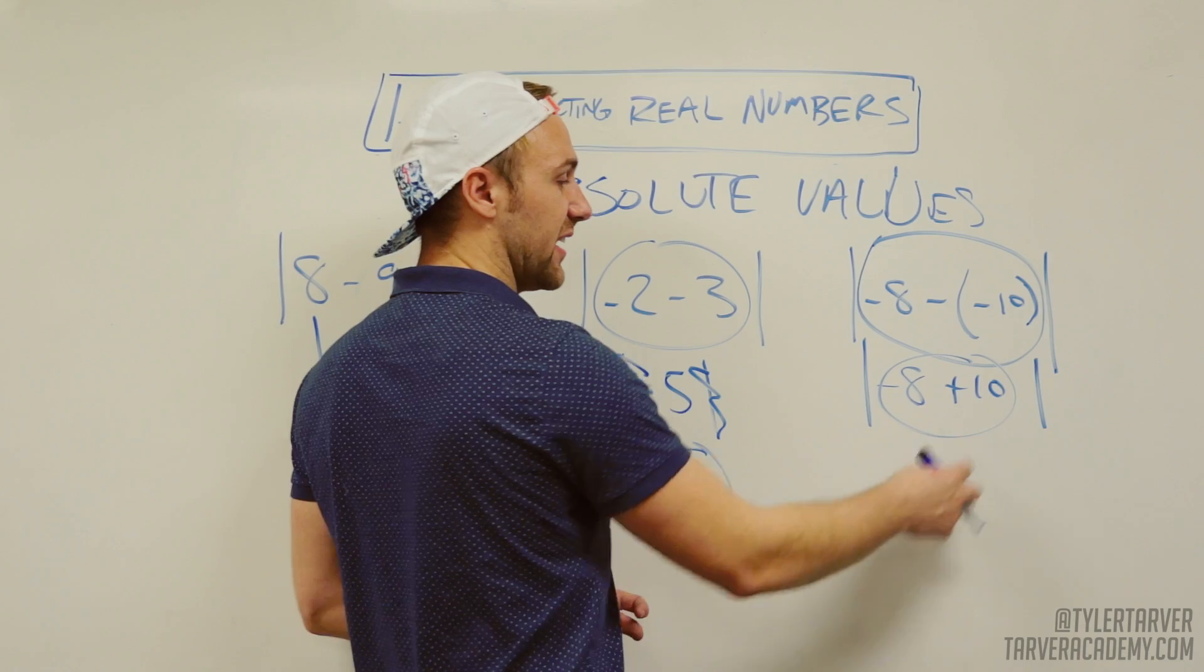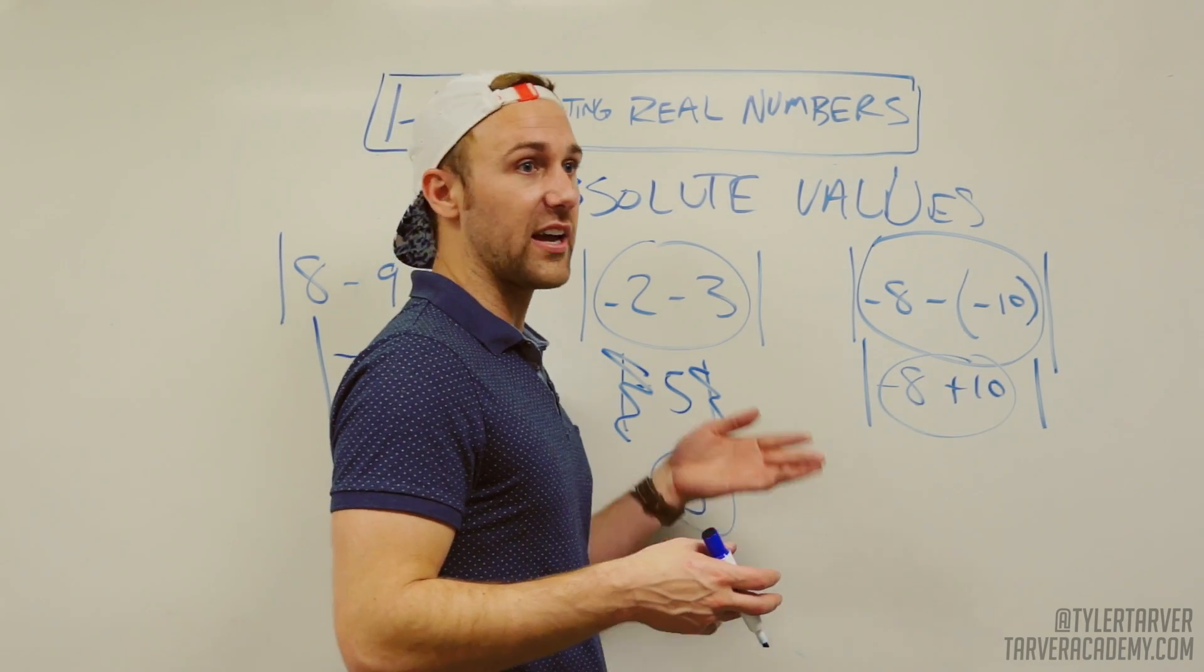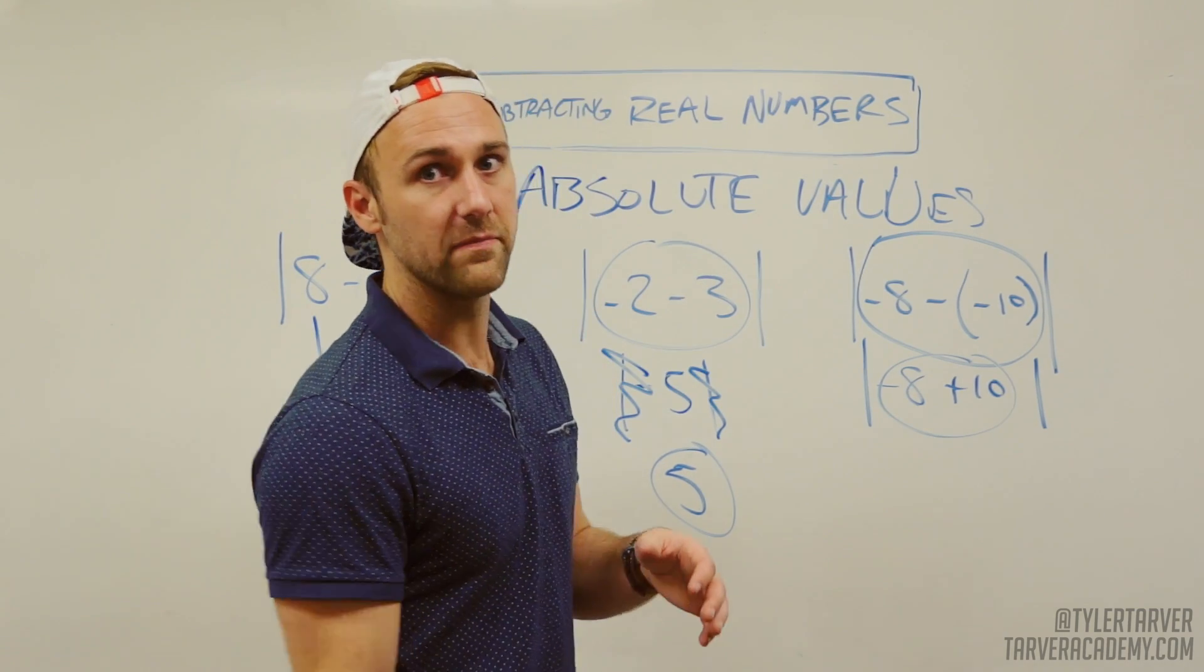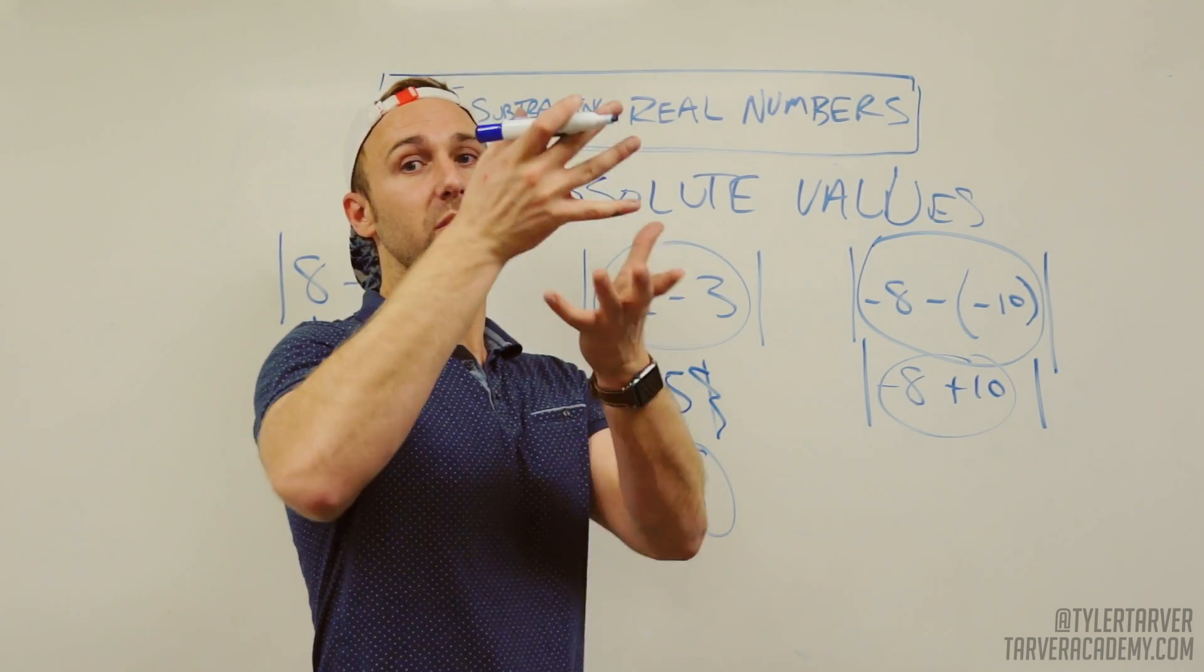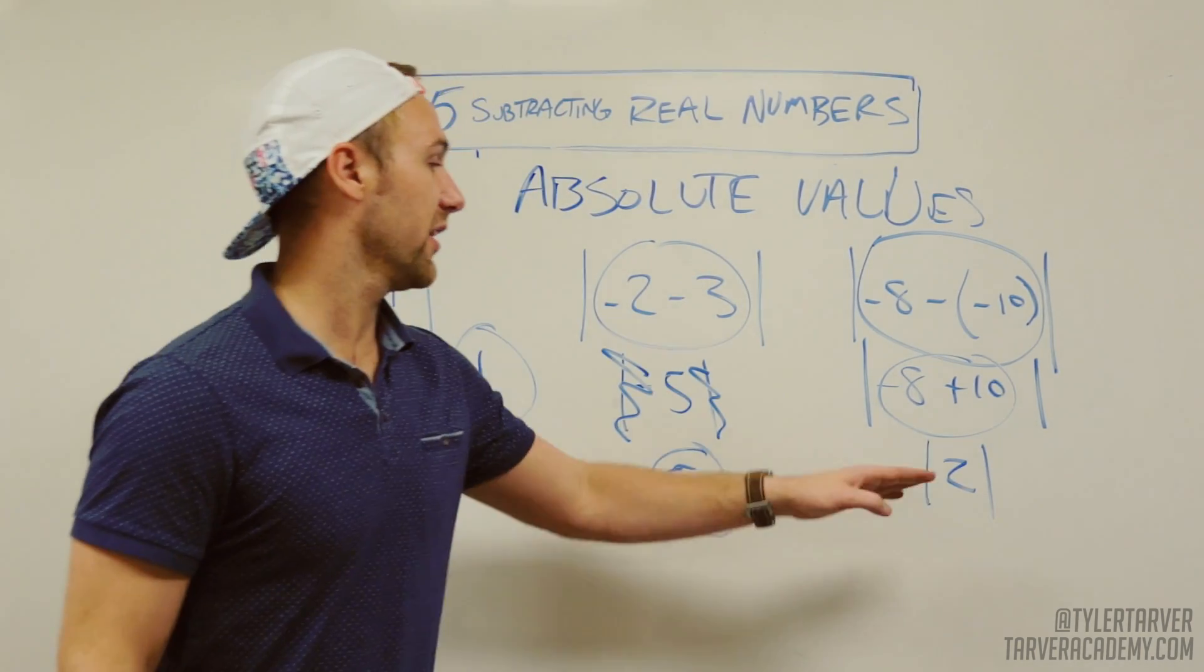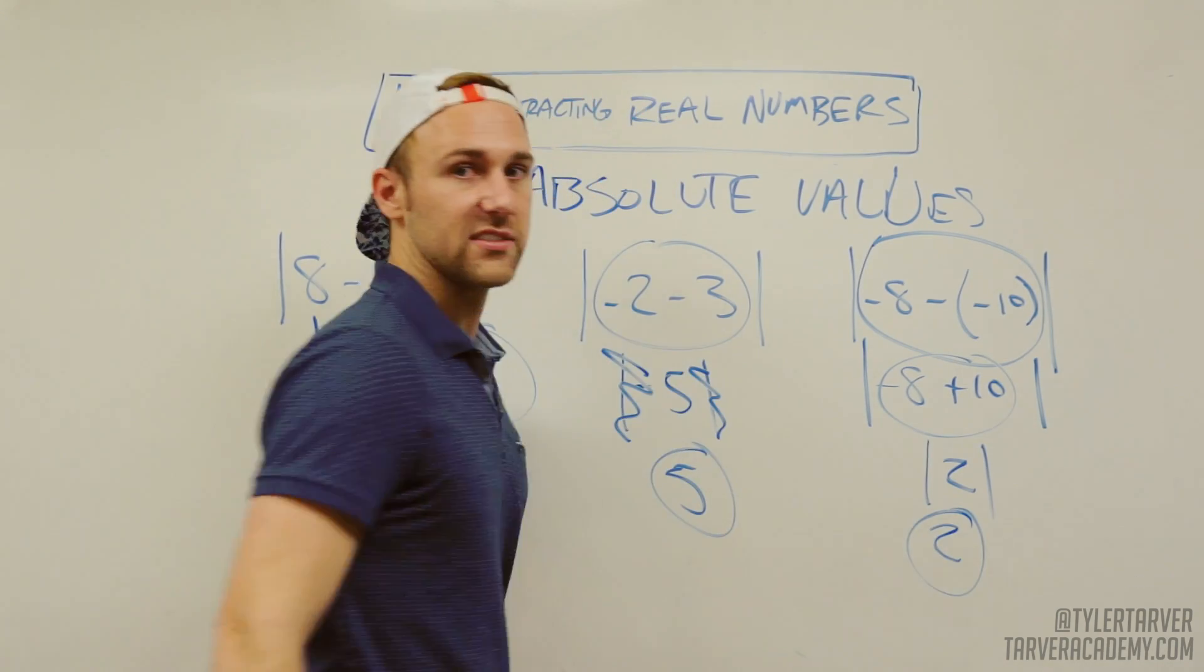We're still just working this. Negative eight plus 10. The 10 is positive. It's bigger. So the eight's not gonna be able to dig all the way down. It's like digging an eight foot hole and then filling up 10 feet worth of dirt. You're gonna be two in the positive. It's positive two. And then we know, because I told you earlier, absolute values of a positive number is gonna remain a positive number.